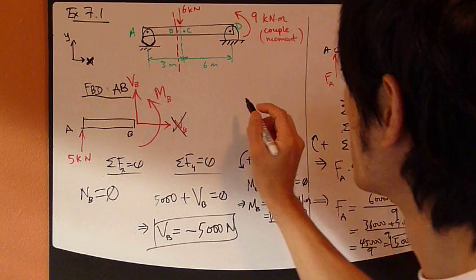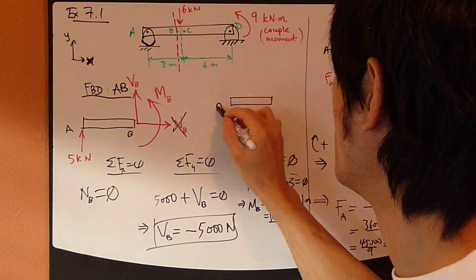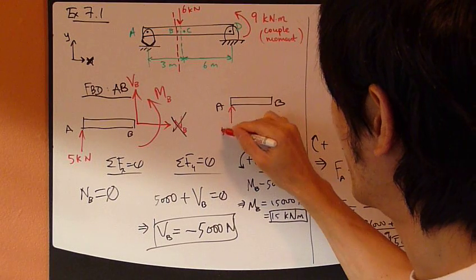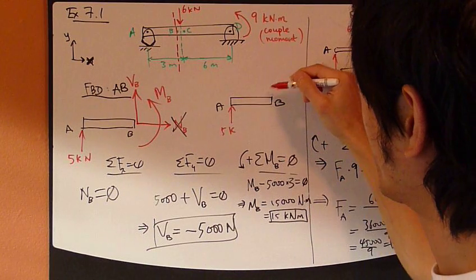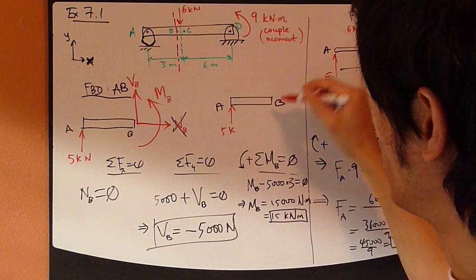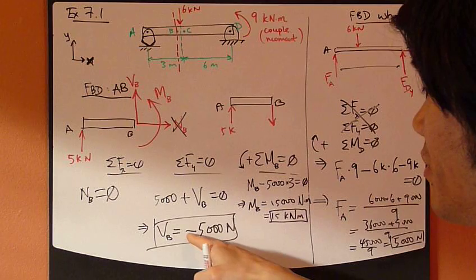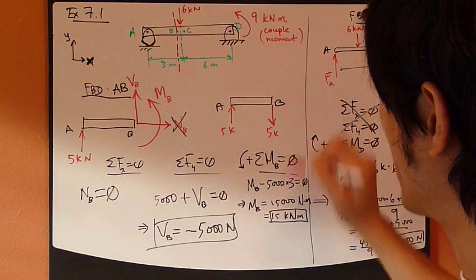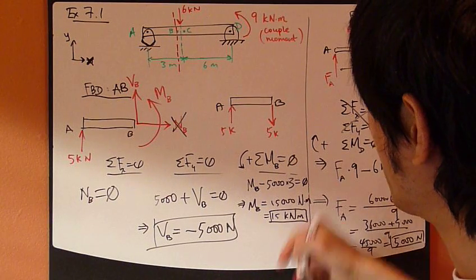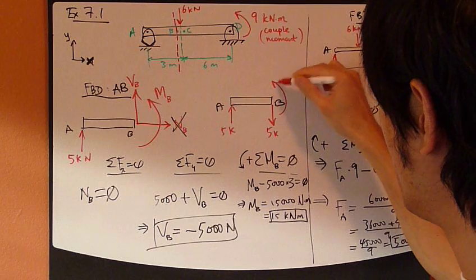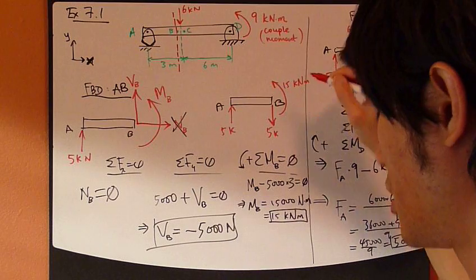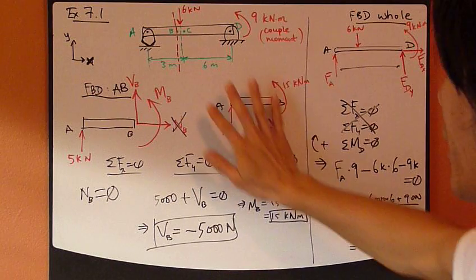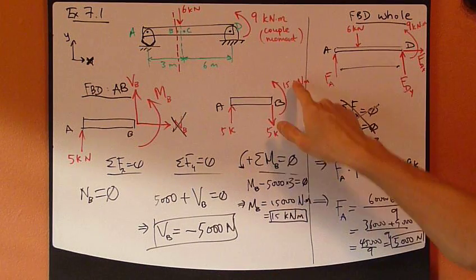So I can redraw this now, draw a second picture of AB with the correct forces and moment direction. I have 5,000 newton, and I don't have normal force now. I only have a shear force going down because of this negative number. So this shear force is 5,000, and I have a bending moment in the counterclockwise direction, 15,000 newton meters. That's all. This is your free body diagram. Everything has been calculated.